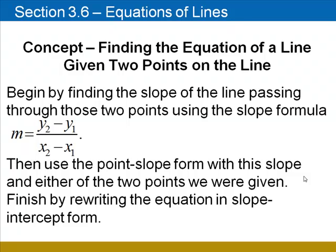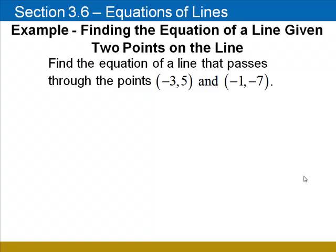So to summarize, calculate the slope, substitute the slope and the coordinates of one point into the point-slope form, and solve this equation for y. Find the equation of a line that passes through the points negative 3, 5, and negative 1, negative 7.